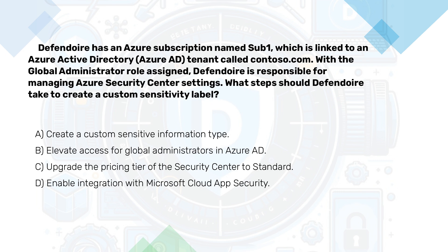A. Create a custom sensitive information type. B. Elevate access for global administrators in Azure Active Directory. C. Upgrade the pricing tier of the security center to standard. D. Enable integration with Microsoft Cloud App Security.